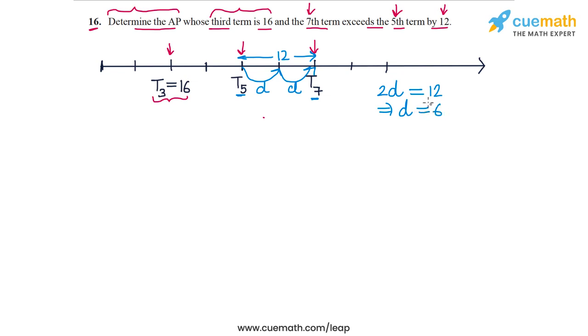So the common difference is equal to 6, and from this we can determine from the third term the second and the first term. The third term is 16, so the second term will be 6 less than 16, which is 10, and the first term will be 6 less than 10, so the first term will be 4.